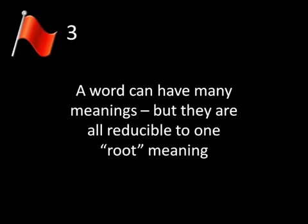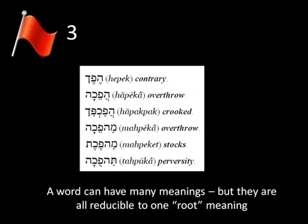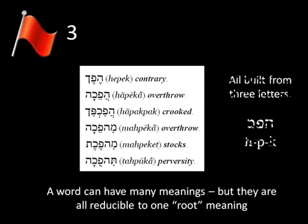Third red flag: the idea that a word can have many meanings, but that they are all reducible to one root or basic meaning. Here's an entry from the Theological Wordbook of the Old Testament. There are six Hebrew words listed, and if you look at the English letters for them, all six share three consonants — H, P, and K. All six are sort of built from that root. Now, if you look at the meanings: contrary, overthrow, crooked, overthrow again, stocks — as in what you'd put prisoners in — and perversity. Can you really say you could look at all these words and come up with one basic idea that is germane or relevant to all of them?